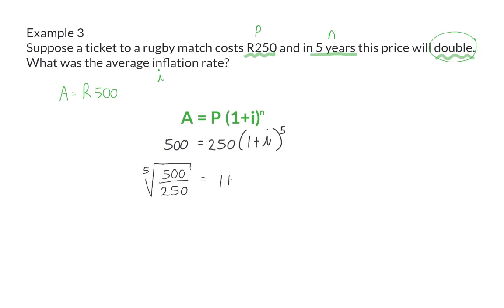On the right, we have 1 plus i, and to solve i, we need to subtract 1 on the left-hand side. So, i will be 0.14869, and to get the inflation rate, we multiply by 100, and that will be 14.87% per year.